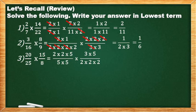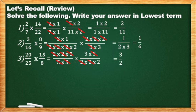So, magka-cancel na tayo ulit. May 2 sa taas, may 2 sa baba. May 2 ulit sa taas, may 2 sa baba. May 5 sa taas, may 5 sa baba. May 3 sa numerator pero walang 3 sa denominator — we cannot cancel 3. Next, 5 and 5. Anong naiwan sa taas? 3. Naiwan sa baba? 2. So, the final answer is 3/2 or 1 and 1/2.